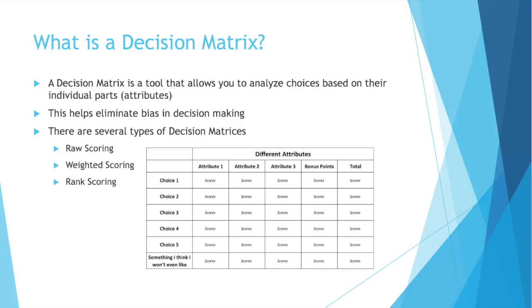At the bottom of the choices, I put something called something I think I won't even like. It's important when doing a Decision Matrix to put in a few things you may not have initially considered. One, based on their attributes, they may actually be good choices. And two, if they're scored low, you know your Decision Matrix is working — assuming you don't like them. But you may be surprised and find out a choice you hadn't considered is actually good for you.